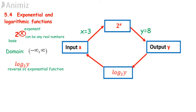Logarithmic functions goes the other way. It starts from the output. If the output for 2 raised to the power of x is 8, what is the input? We can answer this question by using log base 2 of 8, which is equal to 3. That means, in order to obtain 8 as output, the corresponding input is 3.